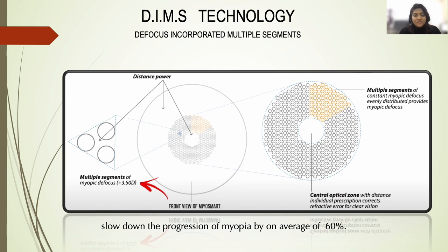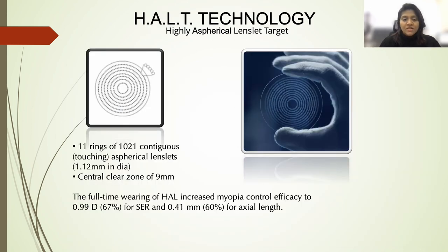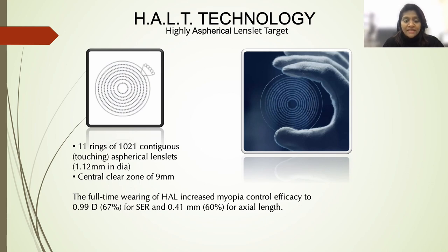Another technology is the HALT technology — Highly Aspherical Lenslet Target — which features a central area of 9 mm clear zone for myopia correction, surrounded by 11 rings of aspherical lenslets at about 1 mm diameter each. This creates myopic defocus in the periphery, thereby reducing myopia progression. Studies have shown that full-time wearing of HALT lenses increased myopia control efficacy to about 67 percent in terms of refractive error and about 60 percent in terms of axial length elongation.